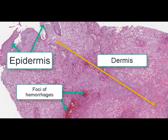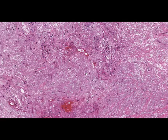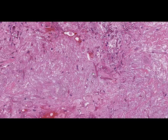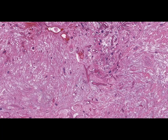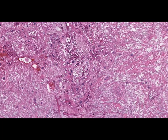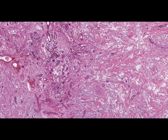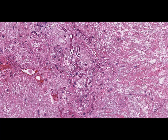Also, foci of hemorrhages can be seen on this slide. At high magnification, some branching eosinophilic formations are found in the dermis. They are hyphae of pathogenic fungi. In addition, it can be noted that there is an absence of expressed inflammatory reaction and some features of disorganization of stromal connective tissue.